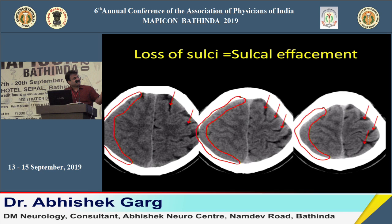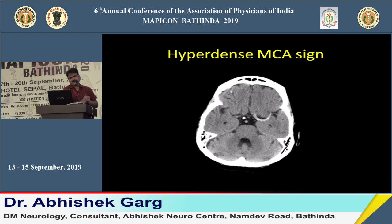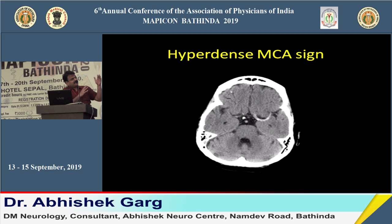Another early sign is the hyperdense MCA sign. In a patient presenting with right-sided hemiparesis, a hyperdense shadow on the left side represents a thrombus lying in the middle cerebral artery. This is an early sign of ischemic stroke, and these patients usually develop large hypodensity in the left frontotemporal-parietal region.